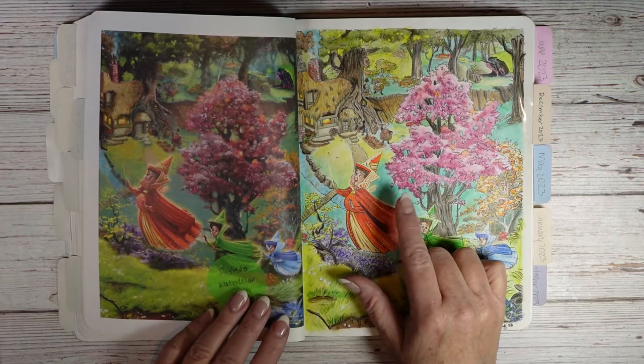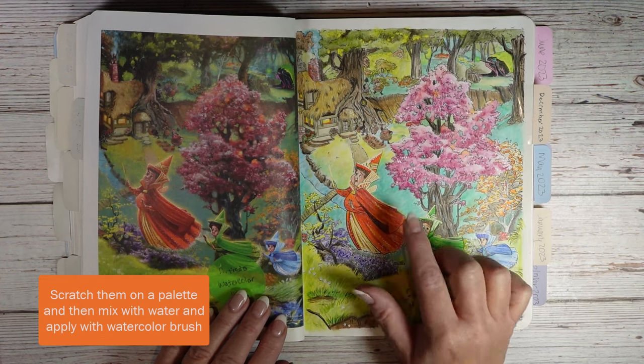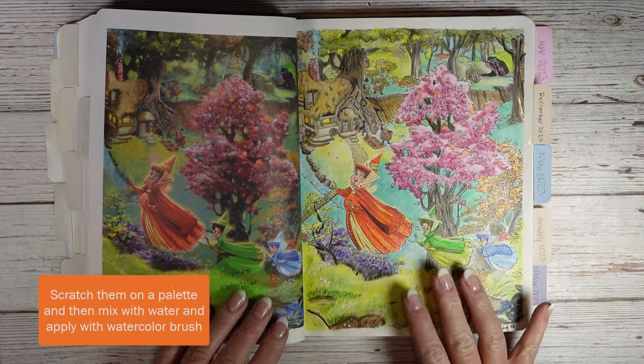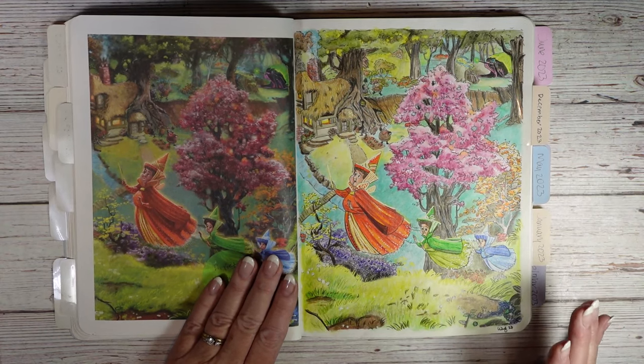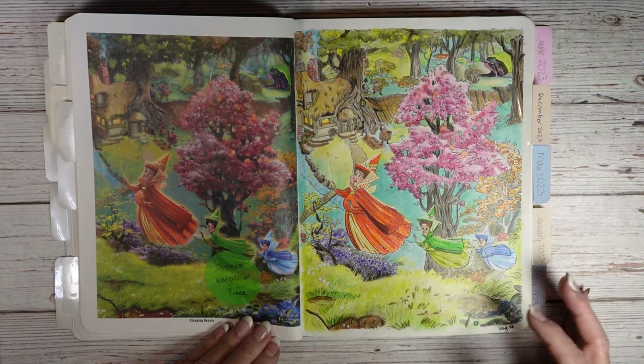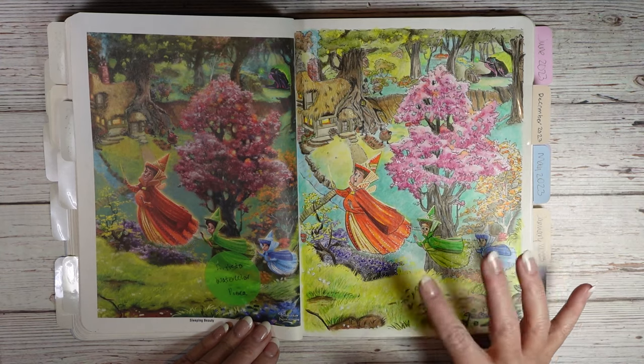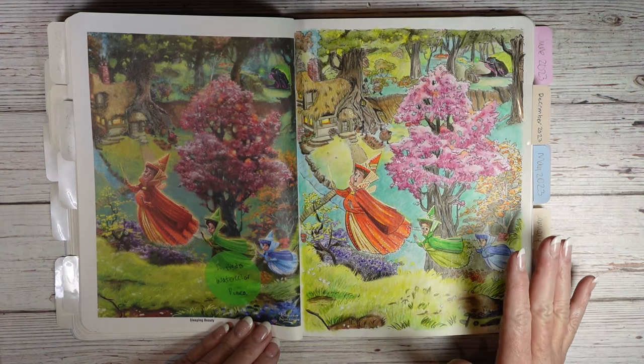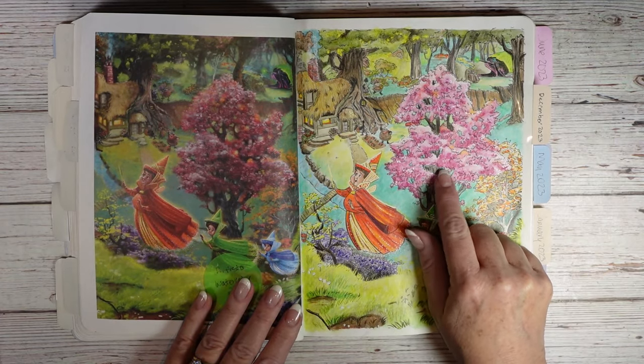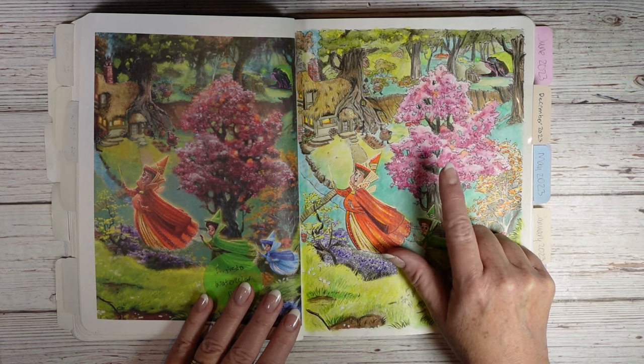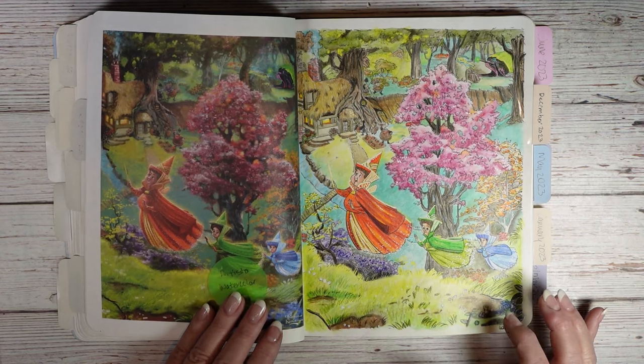But, that being said, I felt like they have nice vibrancy, and I was able to get good effects with them. Now, of course, I used a white Posca pen, but other than that, I used no other colored pencils. I used them both wet, and then, in some instances, like here on the tree, I also used them dry. So, I just wanted to do a quick end to this video and show you what they look like in real life.